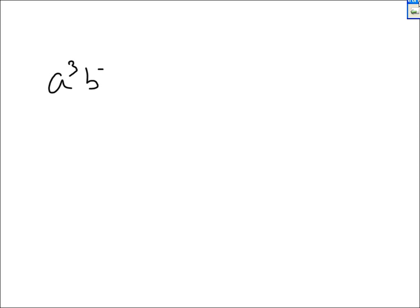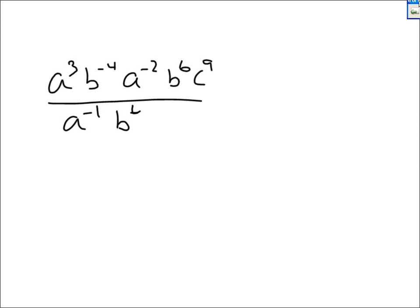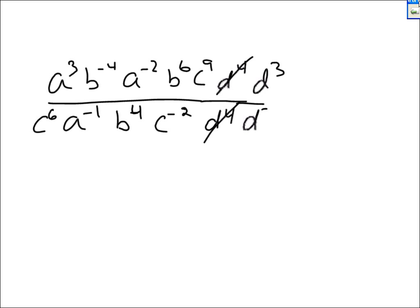Let's do one more problem. What if we have the same bases on top and also on the bottom — that is, more than one base of A on top and one or more on the bottom? We have A cubed, B to the negative 4, A to the negative 2, B to the 6, C to the 9, divided by A to the negative 1, B to the 4, C to the negative 2, and also C to the 6. First, you should clean up top and bottom, with one exception: if you had D to the 4th on top and D to the 4th on the bottom, you could immediately cross that out — D to the 4th over D to the 4th cancels.